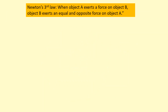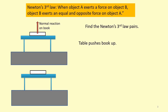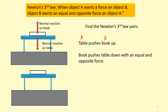A better way to state Newton's third law is: when object A exerts a force on object B, object B exerts an equal and opposite force on object A. For example, the table pushes the book up, and the book pushes the table down with an equal and opposite force. Notice how the forces act on two different objects and are the same type — both normal reaction forces.